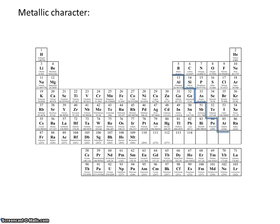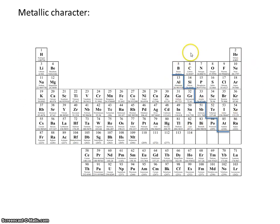You'll remember that there's a staircase on the periodic table. The elements that touch the staircase are known as the metalloids. They separate the metals, which are on the left, from the non-metals, which are on the right.